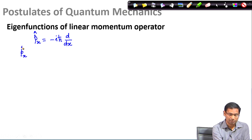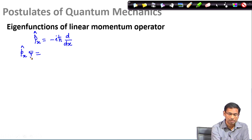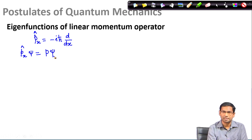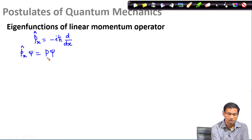I want to find out the eigenfunctions of this linear momentum operator. I start from the premise that let psi be an eigenfunction — of course I do not know what psi is; the purpose of this exercise is to determine psi. I say that psi is an eigenfunction of the p_x operator with eigenvalue p, which is a constant. So I should get back my psi, and this is the eigenvalue equation I must solve to get the eigenfunction psi and the eigenvalue p. I will now substitute the functional form of the operator.